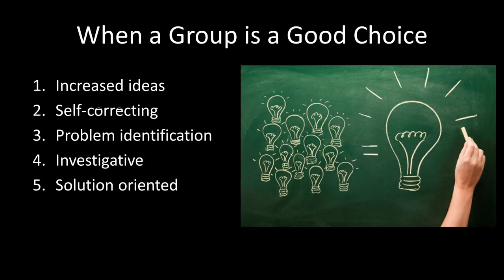When you find yourself in situations where a group is a good choice, you can gain some good net benefits. First is an increased source of ideas — in a group, you'll be able to access more ideas than you would as an individual. Second, groups tend to be self-correcting. The process of being in a group is a communicative one, meaning that as you and your group members work through problems and everyday processes, you'll ultimately have to communicate about those things, making it more likely to identify problems early. This also ties into problem identification — having to discuss problems out loud with other group members means you're more likely to identify issues sooner and more often than if you were going it alone.